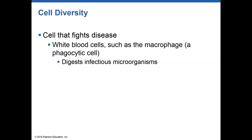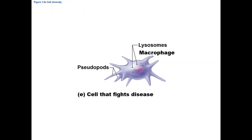We have cells that fight disease. Multiple white blood cells have specific functions. One example is the macrophage — a nonspecific white blood cell that is a phagocytic cell, meaning a cell that eats or breaks down potentially pathogenic material such as bacteria. Macrophages have a nucleus and organelles. Their plasma membrane forms pseudopods that move around bacteria and other materials, forming a vesicle that they pull in and then break down.